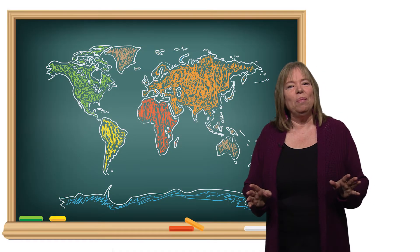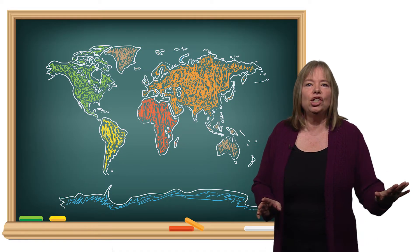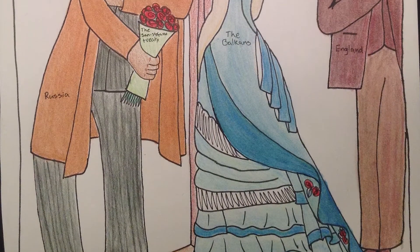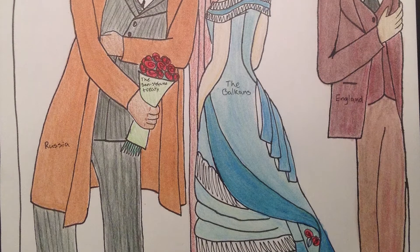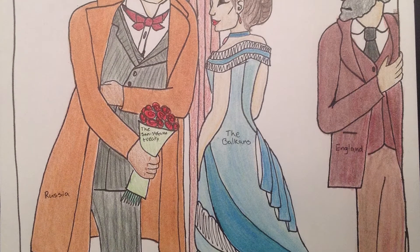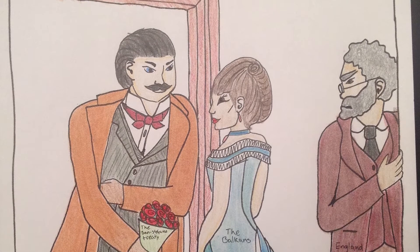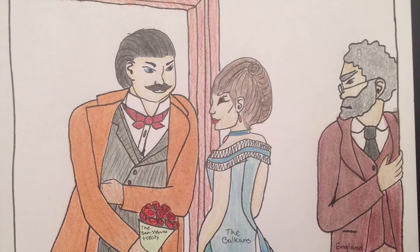This young woman created this drawing to show part of what was going on prior to World War I as Russia wooed the Balkans with a bouquet of provisions in a treaty that were advantageous to both while England looked on in frustration. She's captured this moment in time and portrayed it through the power of political cartooning.